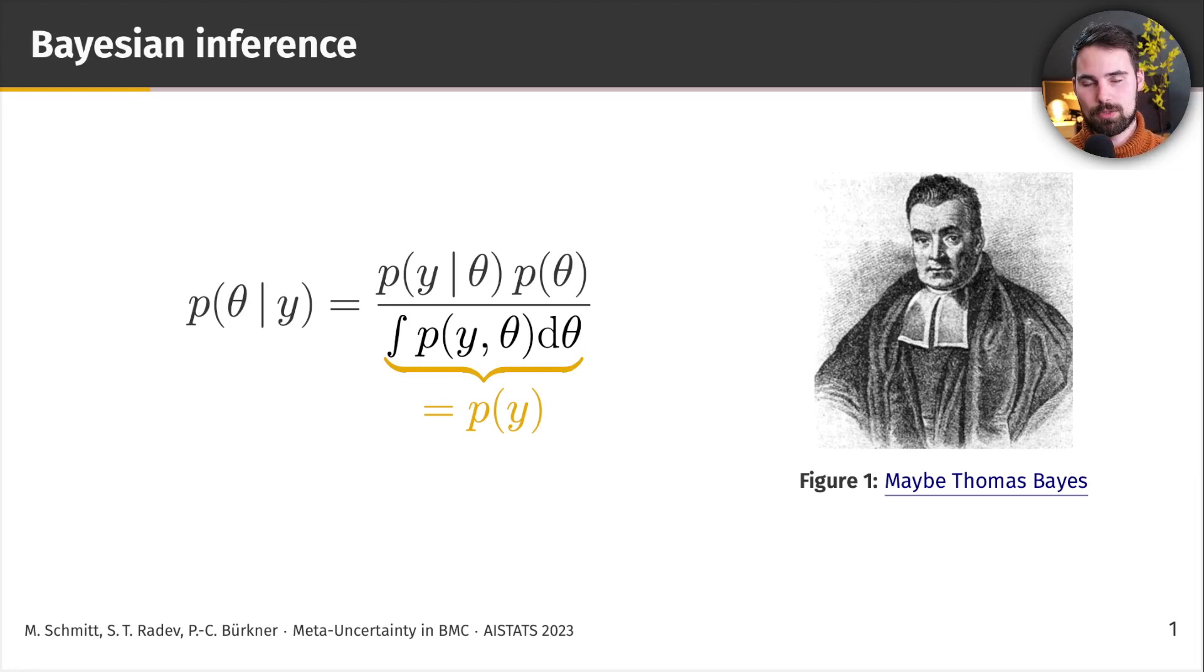And this is established by the likelihood, the distribution of the data conditioned on the parameters, multiplied by our prior belief about the parameters, p(θ), normalized by the marginal likelihood of the data, p(y).